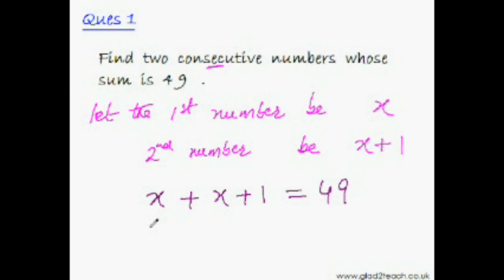Now what we have here is a very simple linear equation, and you're already an expert at solving linear equations. This would be 2x plus 1 equals 49, or 2x equals 48, or x equals 24. So one number is 24.